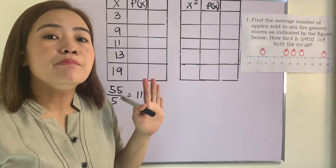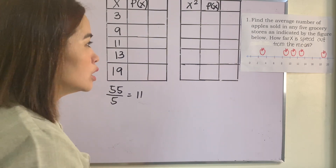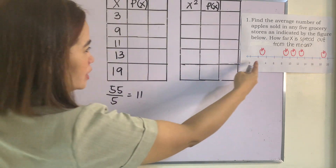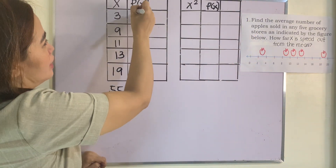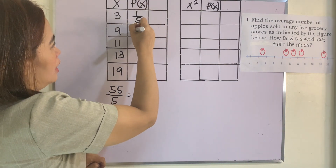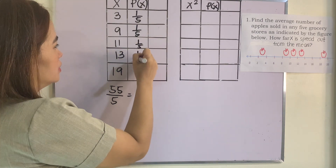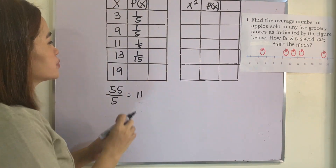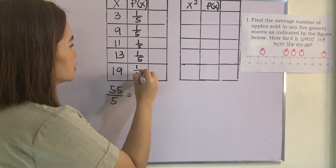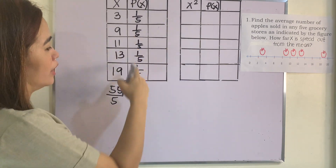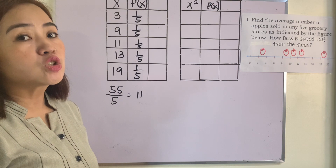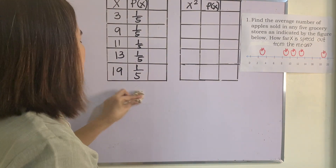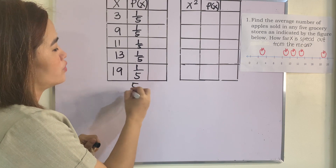Now, how are we going to get the mean of a discrete random variable? We need to construct a probability distribution like this. We have 3 — how many times does it appear? That is 1, so that is 1 over 5. Same with 9, 11, 13, and 19 — each appears once, so each has a probability of 1 over 5. Adding everything gives us 5 over 5, which equals 1, confirming this is a valid probability distribution.